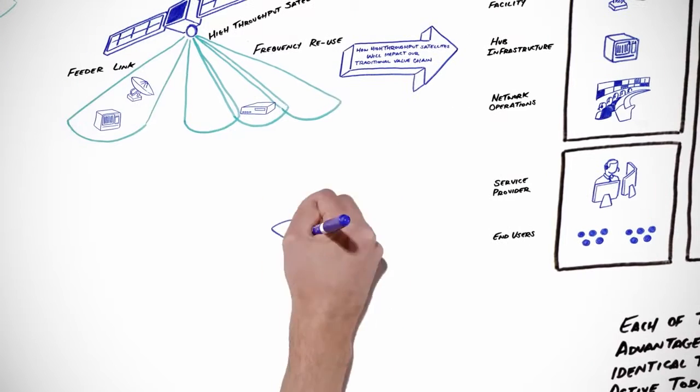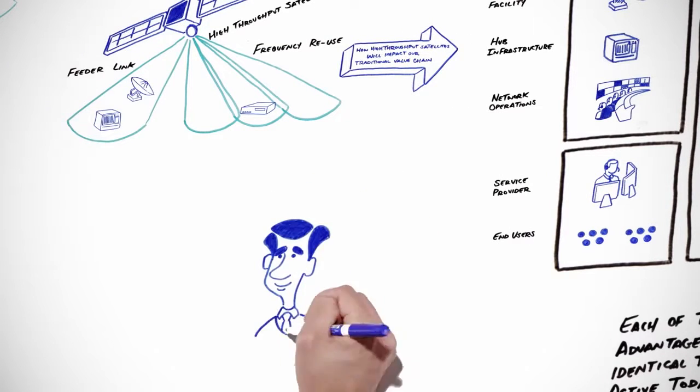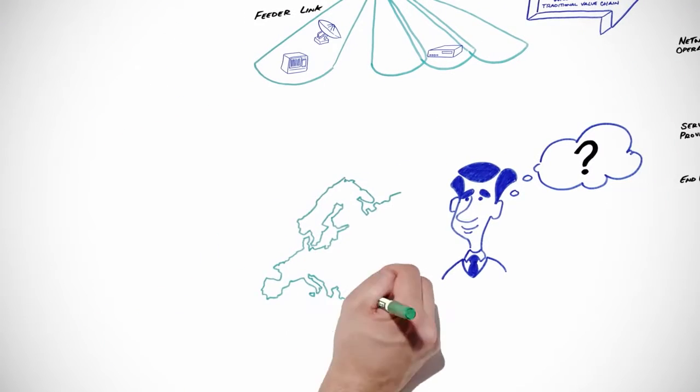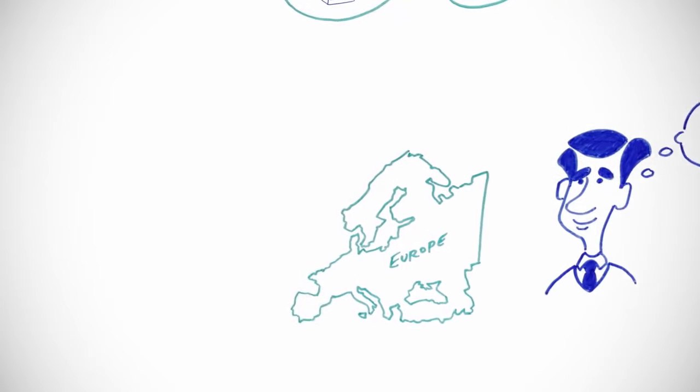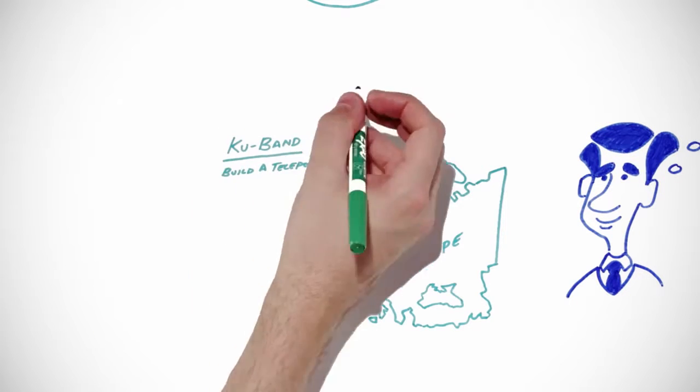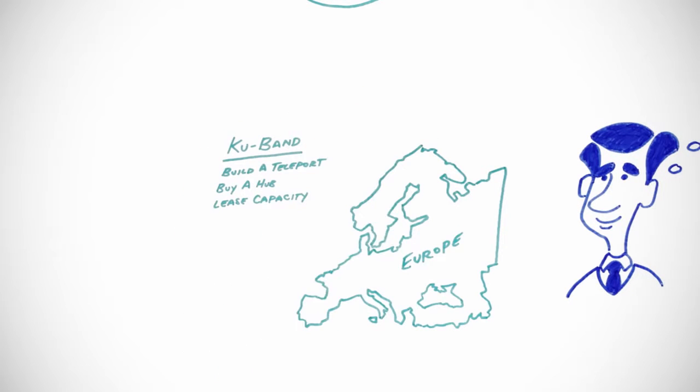So how can service providers integrate these business models with their existing operations and grow their business? Say you're a service provider based in Europe. To serve customers in the region, you launch a KU band network. You build a teleport, buy a hub, and lease capacity from a satellite operator.